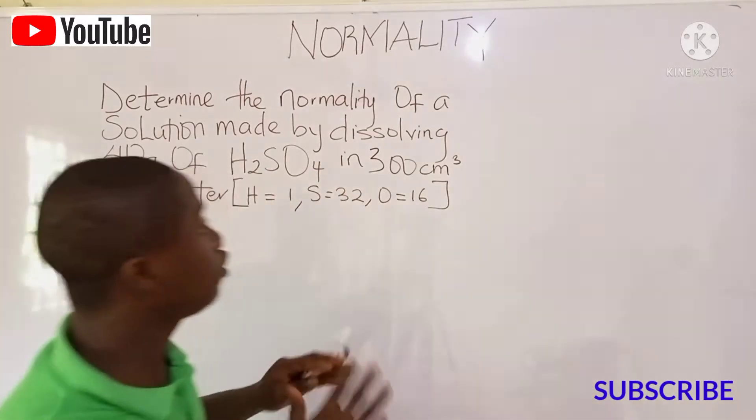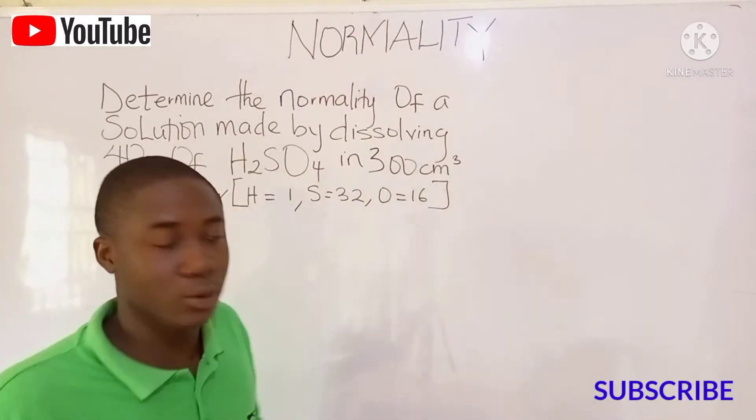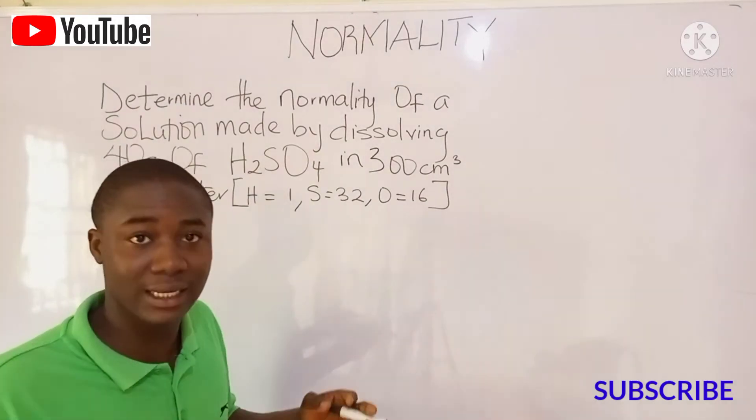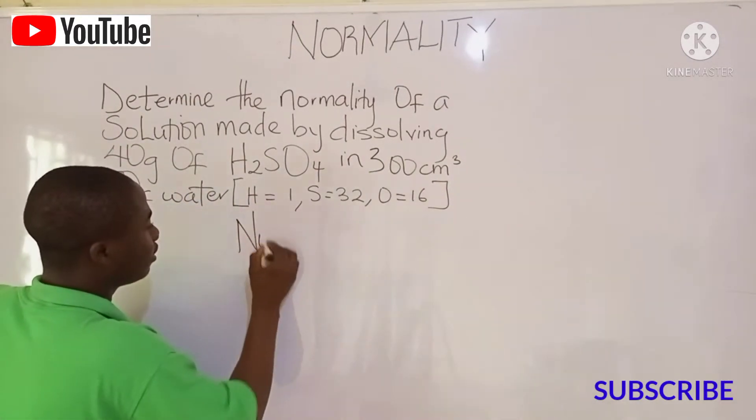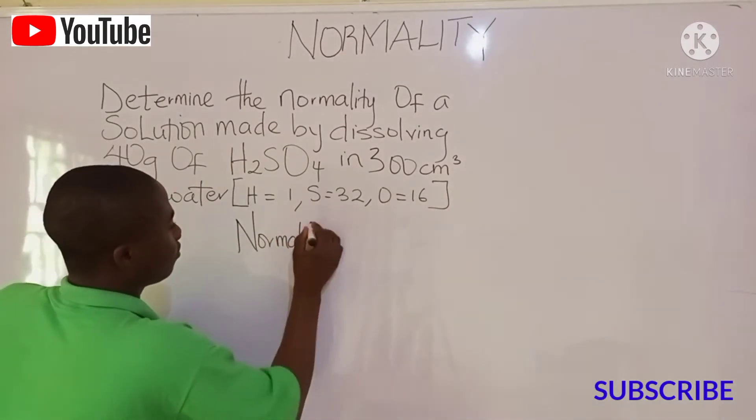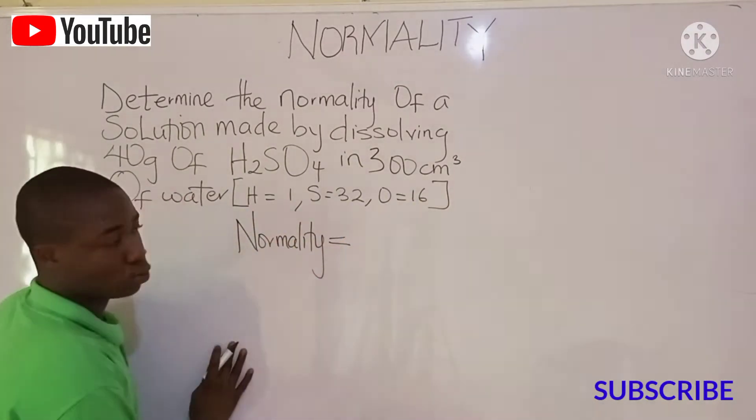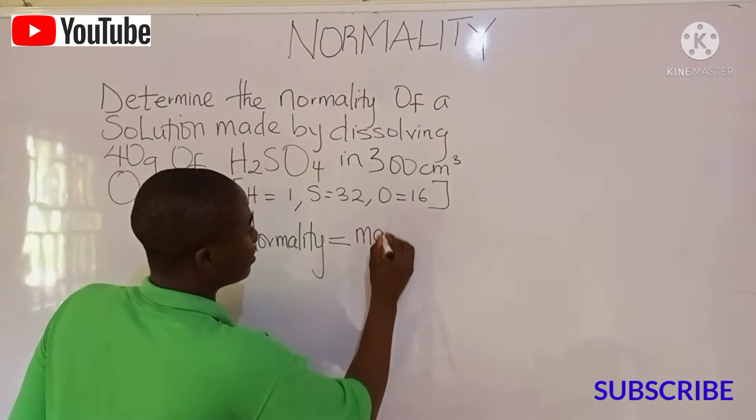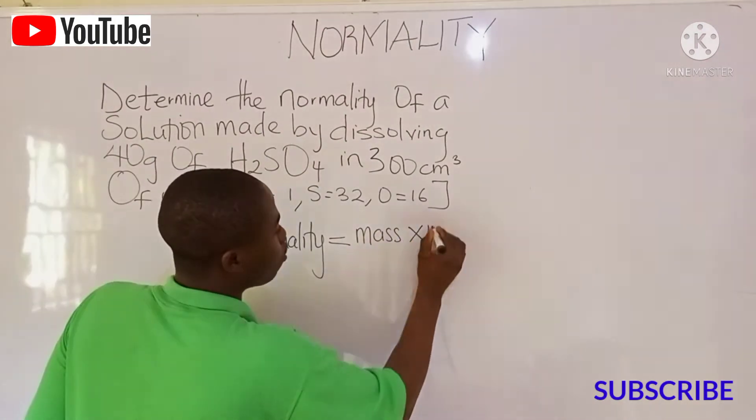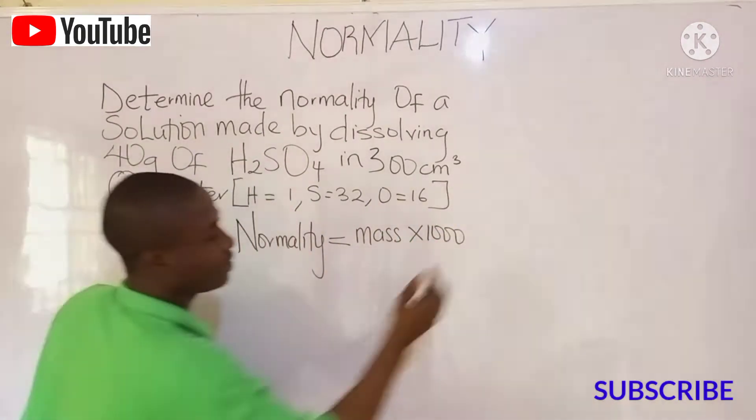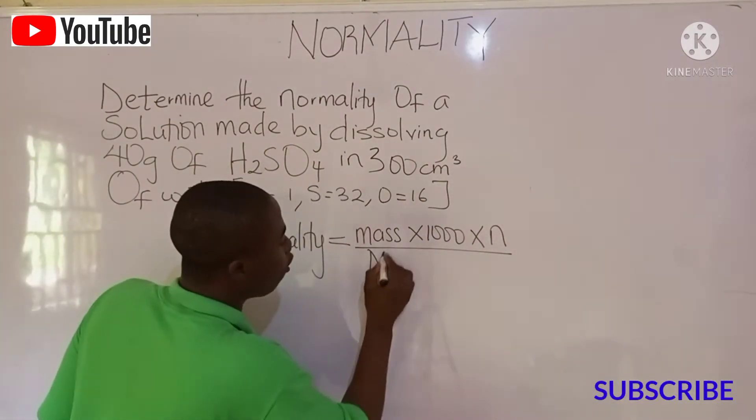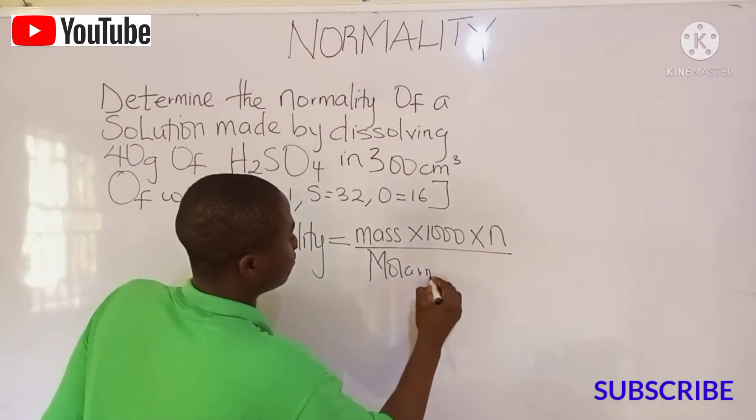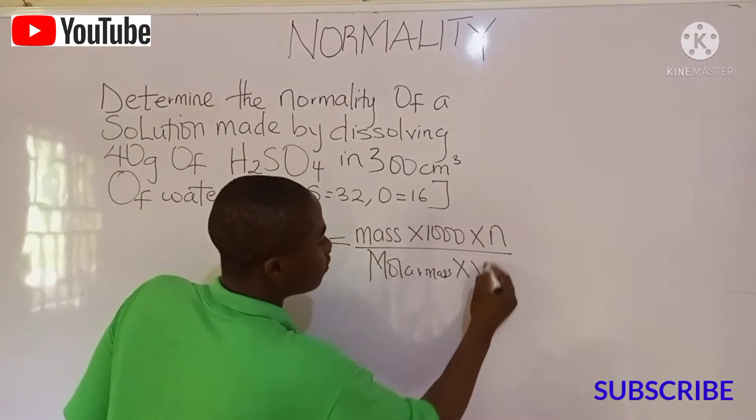In today's video lesson, I'll be giving us a simple formula to be used when solving problems on normality. And what is the formula? Normality is equal to mass times 1000 times N over molar mass times volume.